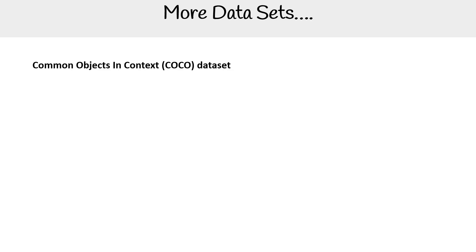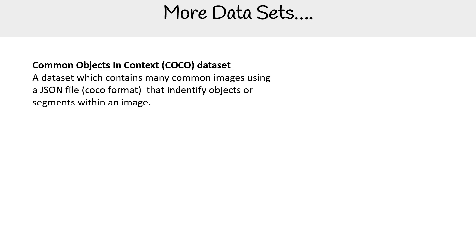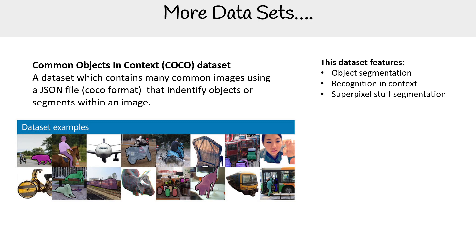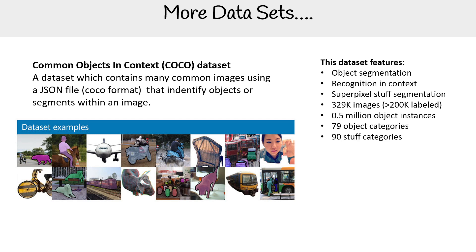Another very popular dataset is the Common Objects in Context, or COCO, dataset. It contains many common images using a JSON file COCO format that identifies objects or segments within an image. This dataset includes object segmentations, recognition in context, superpixel stuff segmentation, a large number of images, and many objects.